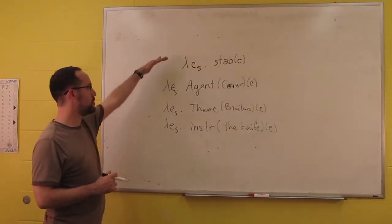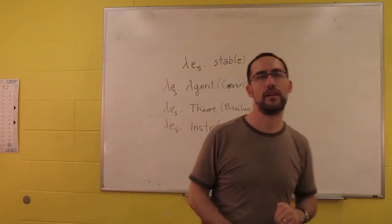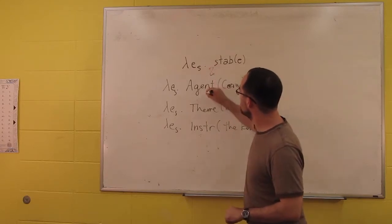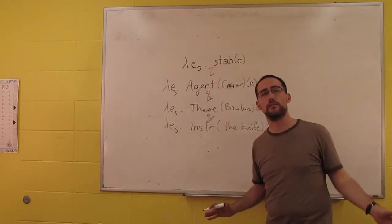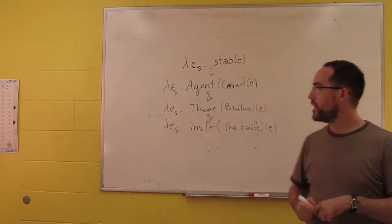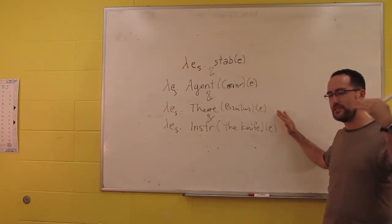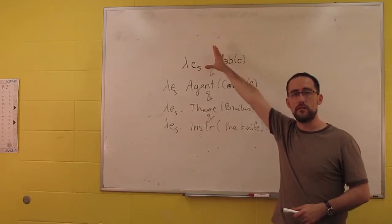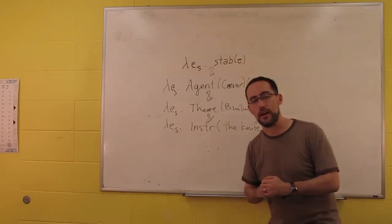We can do this for thematic role after thematic role. Notice these are all of type ST — they're all the same type, so we can combine them through predicate modification. And now the entailments work, just like they did with the adjuncts to begin with. We existentially quantify over the event and get exactly the entailments that we want.